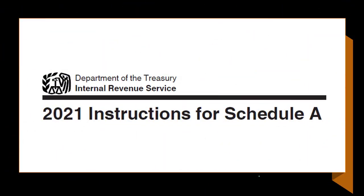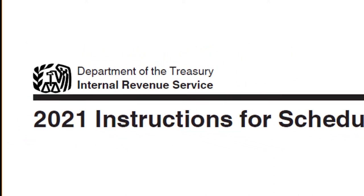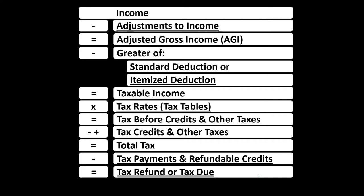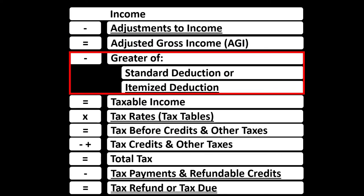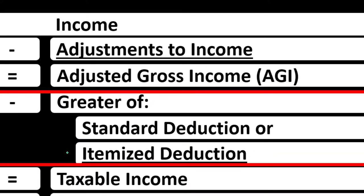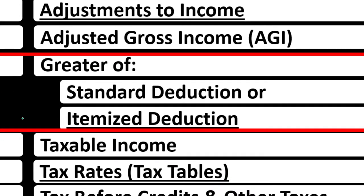Most of this information can be found on the Schedule A Instructions Tax Year 2021 found on the IRS website at irs.gov. Here is our income tax formula focused on the itemized deductions, keeping them distinct in our mind from the adjustments to income, which you might hear called the above-the-line deductions, the deductions for adjusted gross income, or possibly the Schedule 1 deductions.